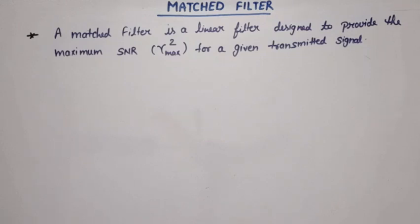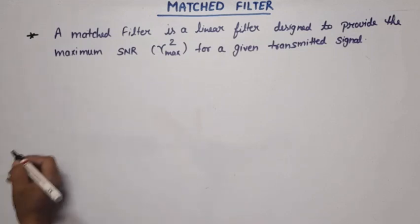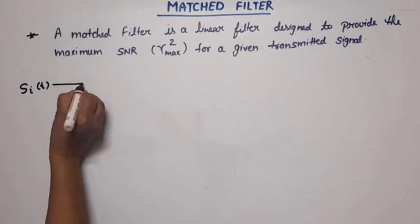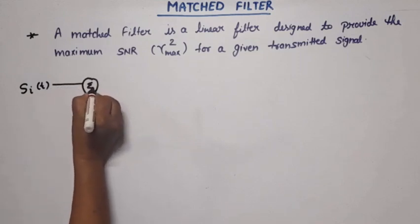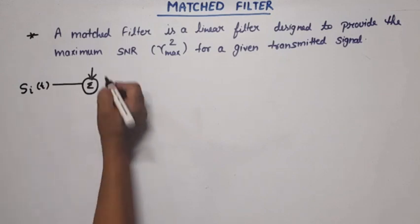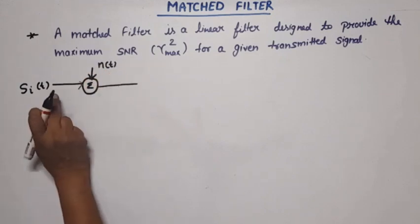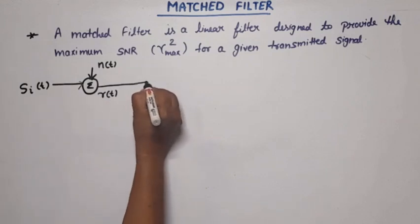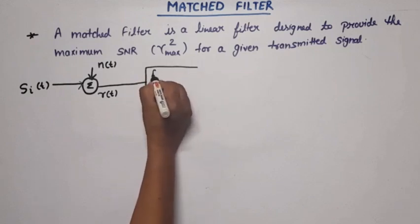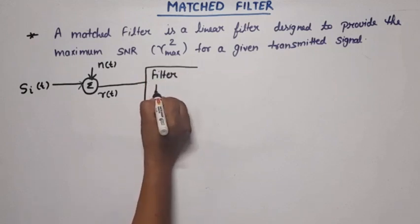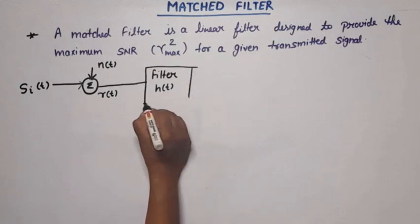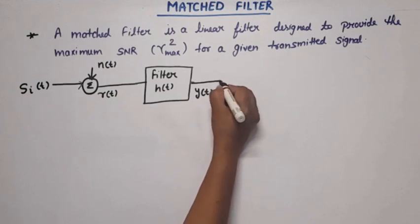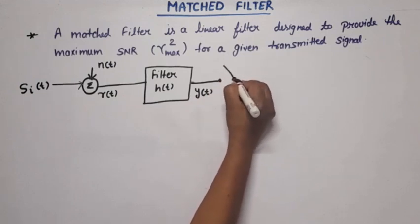Suppose the signal transmitted from the transmitter is s_i(t). This was transmitted through the channel. On the channel, noise is added — let this noise be n(t). After addition of signal and noise, the received signal r(t) is received at the receiver end. At the receiver end, this signal is passed through a linear filter which has impulse response h(t). The output of this filter is y(t).